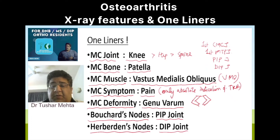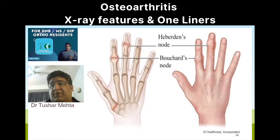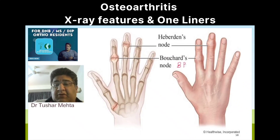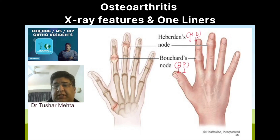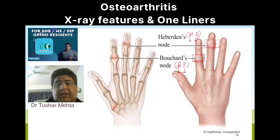When I was preparing, it was difficult to remember which node is in which joint, so I made a mnemonic: 'Blood pressure leads to heart disease' — B for Bouchard's, P for PIP; H for Heberden's, D for DIP. Since old age is associated with blood pressure and heart disease, it makes for an apt mnemonic for osteoarthritis too.